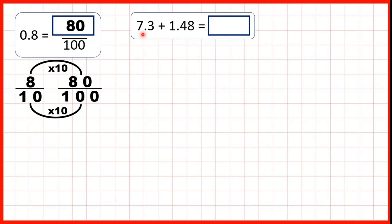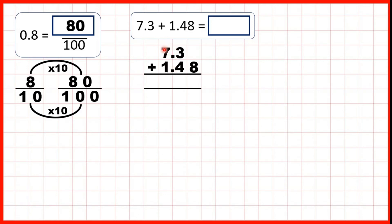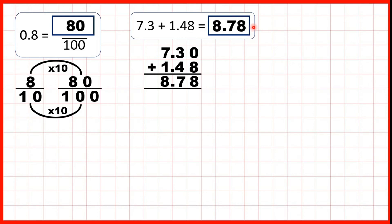7.3 plus 1.48. Now, with this question, it's really, really important to write out the column addition with the decimal points lined up, because if the decimal points are lined up, then all of our other place values — our 1s, our 10s, and our 100ths — will be lined up as well. We can write 0 in empty squares, and so that we don't forget, let's copy the decimal point down into our answer straight away. Now, 0 plus 8 is 8, 3 plus 4 is 7, and 7 plus 1 is 8, so our answer is 8.78.